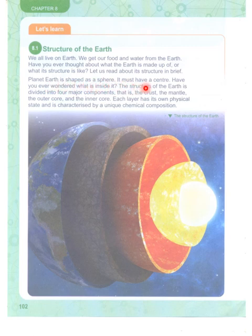It must have a center. Have you ever wondered what is inside it? The structure of the Earth is divided into four major components: the crust, the mantle, the outer core, and the inner core. Each layer has its own physical state and is characterized by a unique chemical composition.